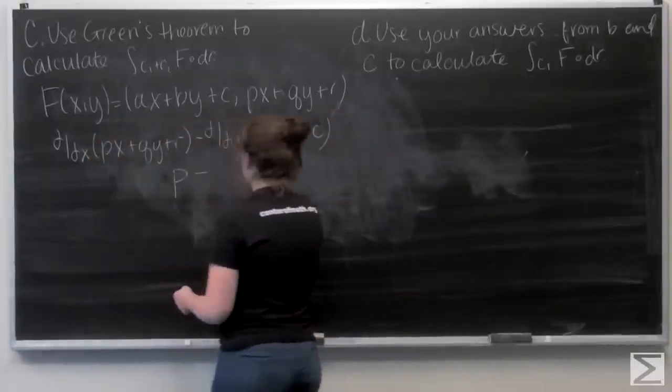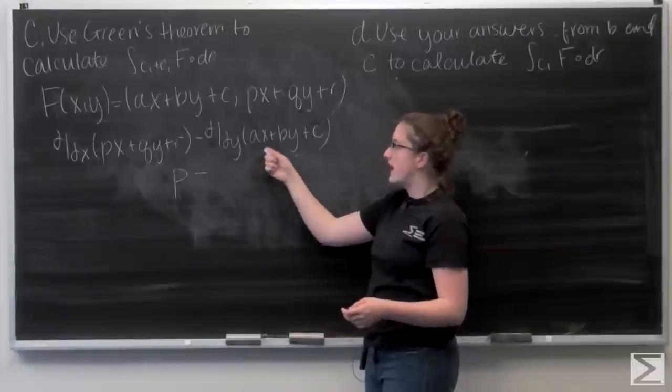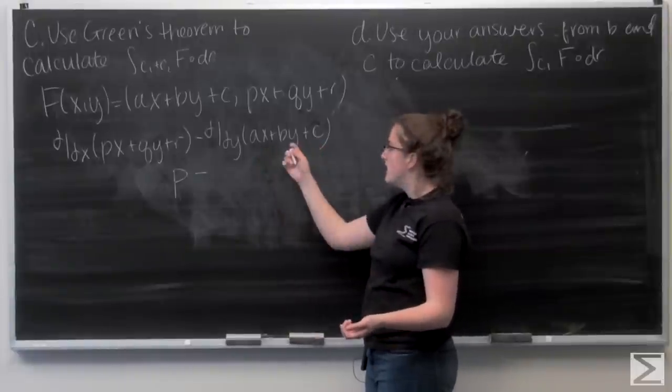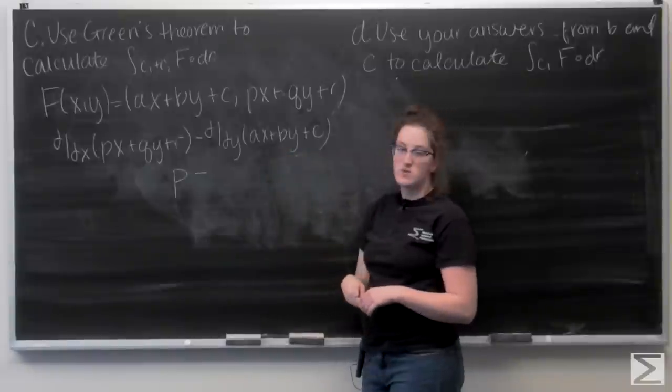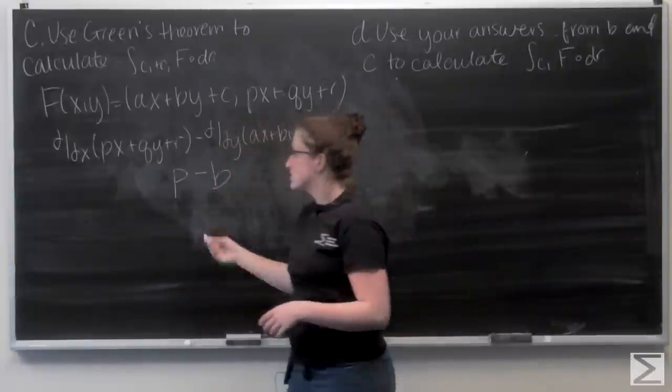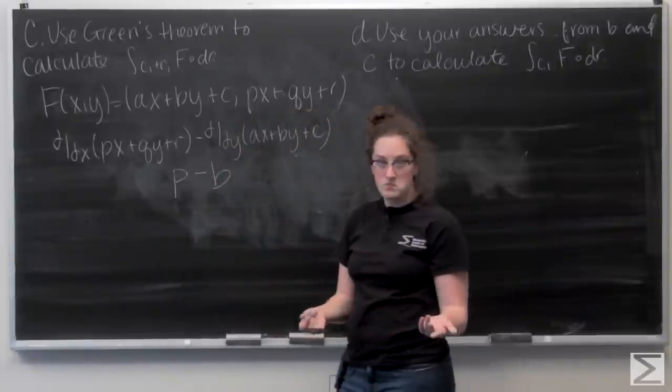And then likewise for the second term, ax and c are constants, so when I take the derivative they're going to drop out. And then the partial derivative with respect to y of by is b. So my two-dimensional curl is just p minus b. So that's pretty easy.